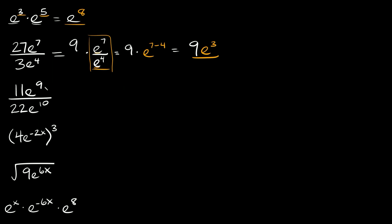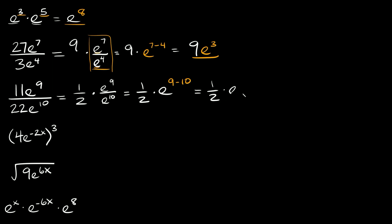Now here we have a similar problem: 11e to the ninth over 22e to the tenth. Again we can simplify our numbers — 11 over 22 is equal to one half. So this is going to be equal to one half multiplied by what we have left over, which is e to the ninth over e to the tenth. Again same bases, so we subtract the exponents: nine minus ten equals negative one. So this is equal to one half times e to the negative one.